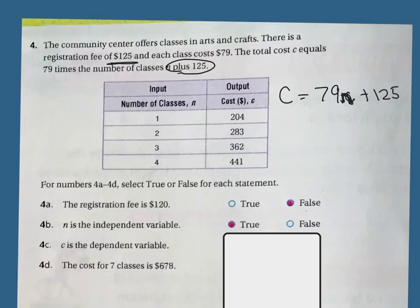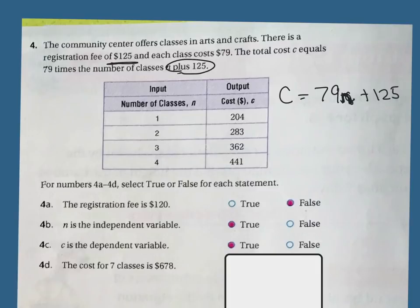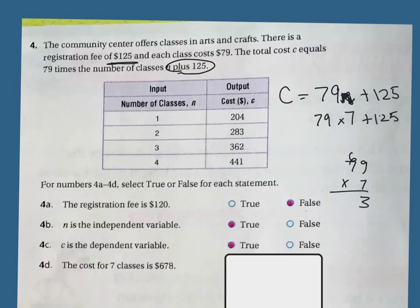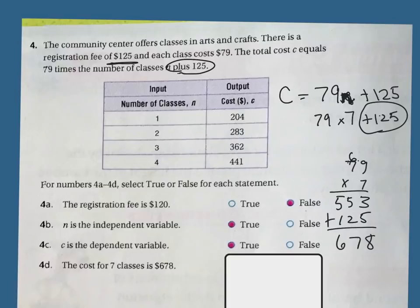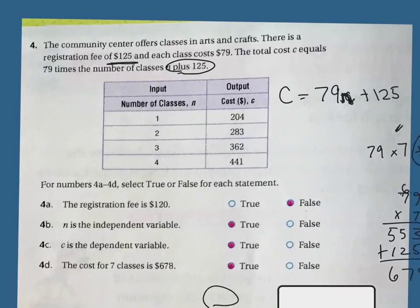C is the dependent variable — is C my answer? Yes, C is my dependent variable. For the total cost, the cost for seven classes is $678. Let's plug it in: 79 times 7 plus 125. Seven times nine is 63, seven times seven is 49 plus six is 55, and then add the $125 registration fee — I get 678. They said it's 678, so that should be true.